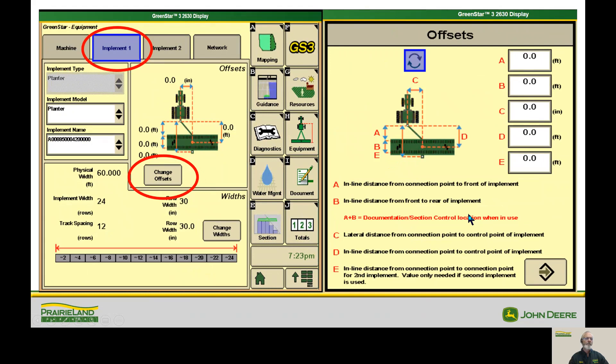So now we're on the implement. We're going to do the same thing here. We're going to hit change offsets and we'll get this screen. You'll notice that it's in feet. A is the measurement from the pivot point to the front of the planter. B is from the front of the planter to where the seed hits the ground. And D is going to be what we call the control point, or where the planter pivots as it's turning a corner.